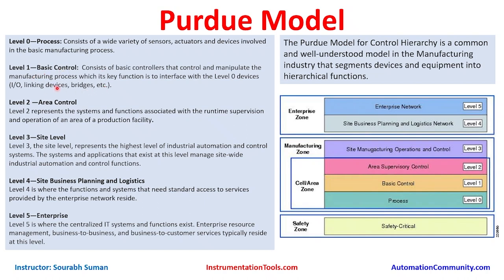Moving ahead, level 2 is the area supervisory control level. It represents the systems and functions associated with runtime supervision and operation of an area of a production facility. Solutions like HMIs, workstations, or local control panels reside here — from where you can monitor and perform runtime operations on your process.